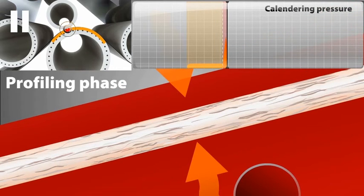In the profiling phase, a deflection compensated roll applies an additional CD profiling load, the only control parameter for the metal belt calendar to get the desired caliper level and to ensure a uniform profile.